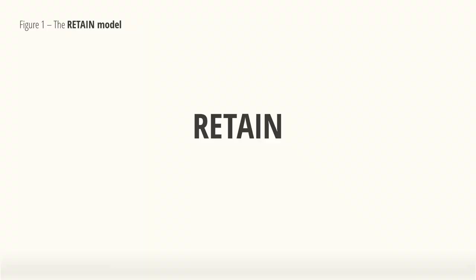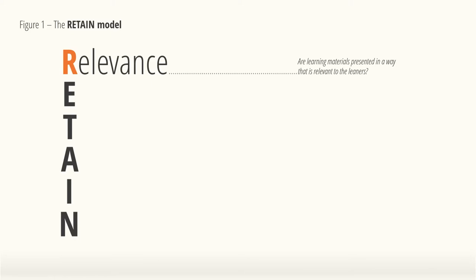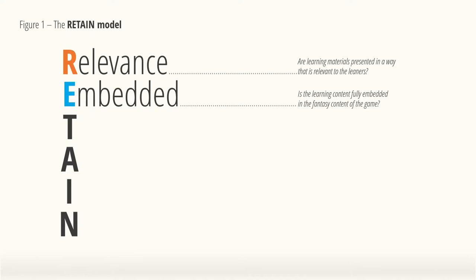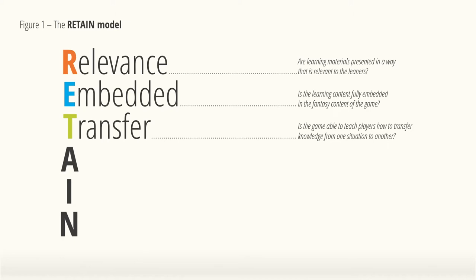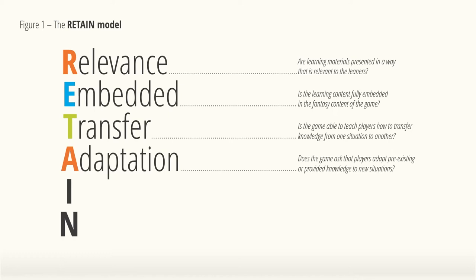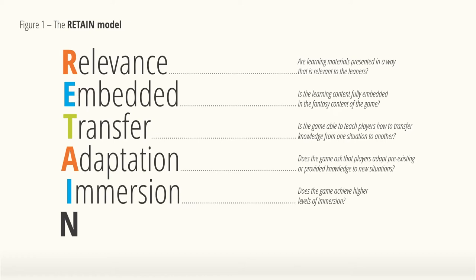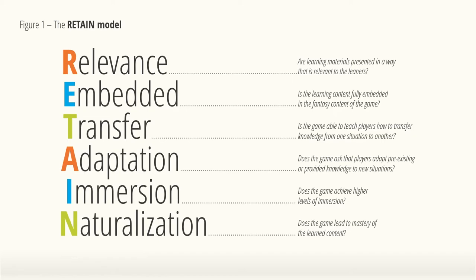R, or Relevance, asks whether the learning materials are presented in a way that is relevant to the learners — this relates to building on prior knowledge and making the game motivating. E means Embedding — is the learning content fully embedded in the fantasy content of the game, what we discussed as endogenous fantasy and integrated game design. T is Transfer — I hope I don't have to explain that after the first part of this video. A means Adaptation — does the game ask players to adapt pre-existing knowledge to new situations? I refers to Immersion — does the game achieve higher levels of immersion? And N, or Naturalization — does the game lead to mastery of the learned content?